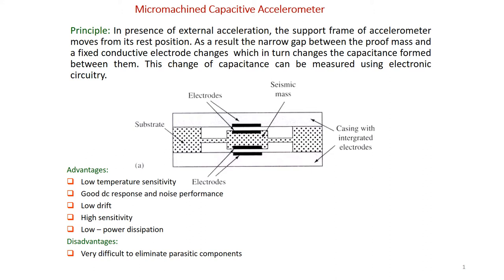Next, our discussion will be on the capacitive type accelerometer. The capacitive type accelerometer is also similar to our capacitive pressure sensors. Here, because of the applied accelerations or the applied force, the capacitance will change.